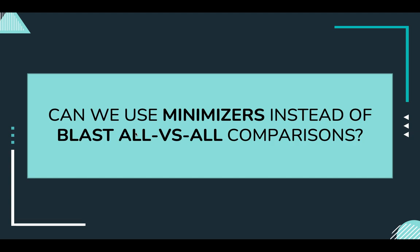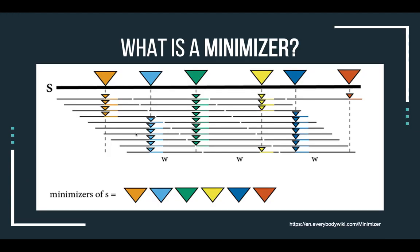First of all, we need to understand what a minimizer is. A minimizer is a k-mer that can represent a sequence based on a function known as the hashing function, which is defined within the algorithm.